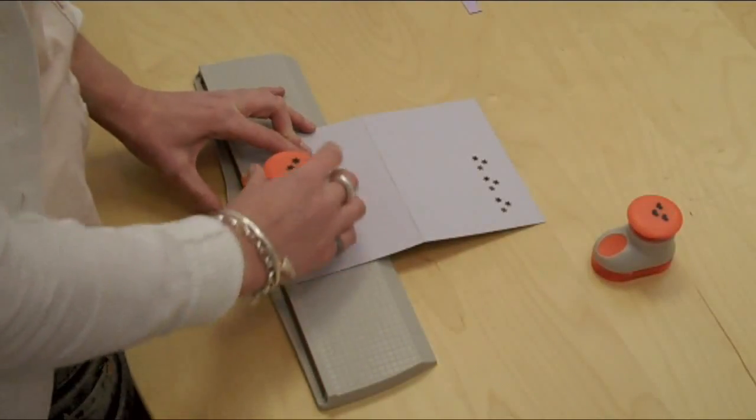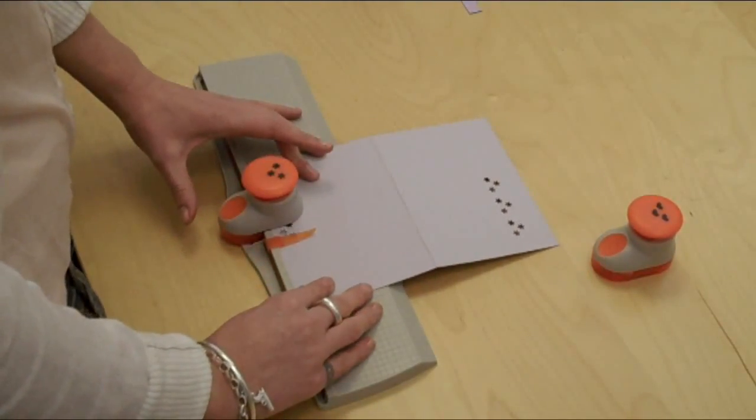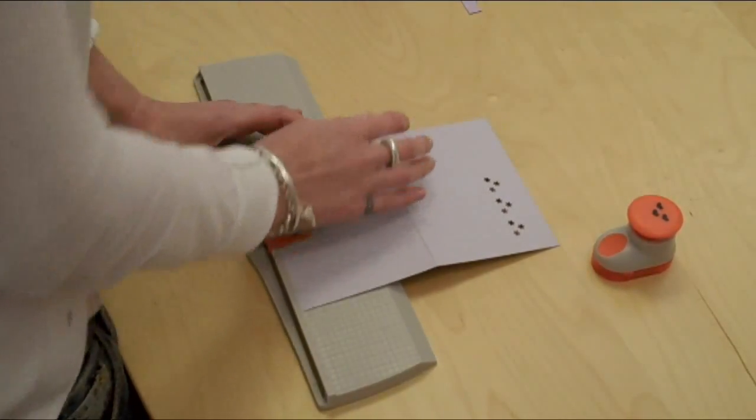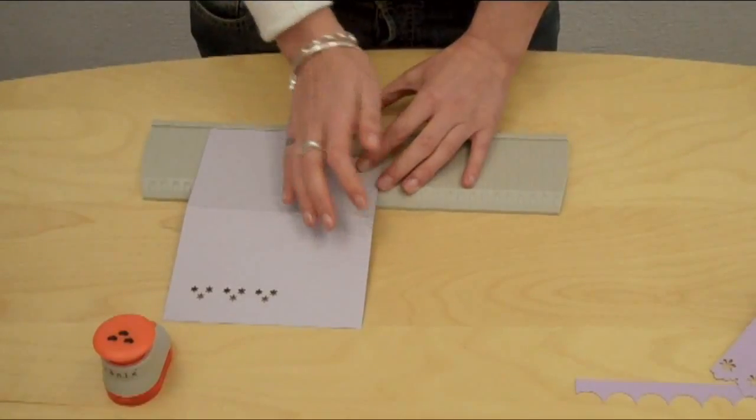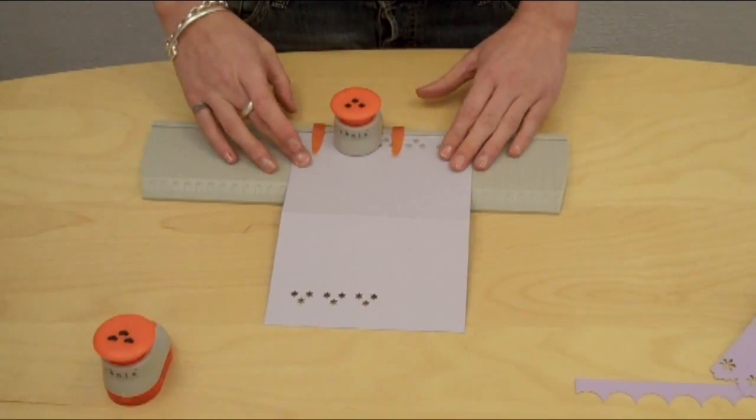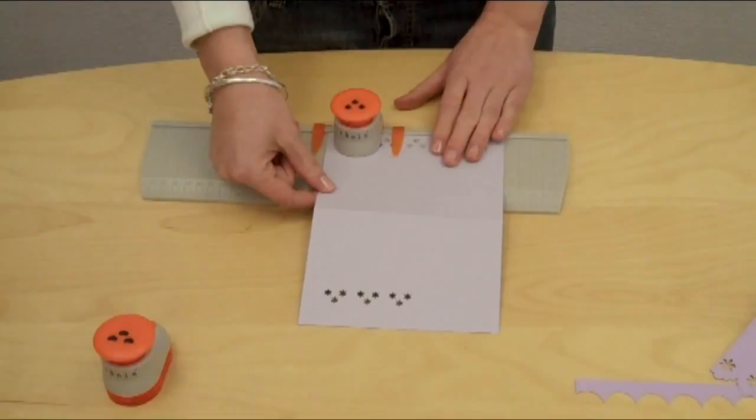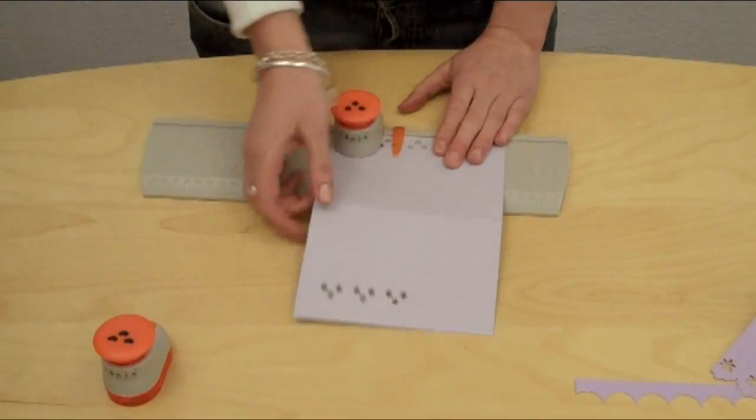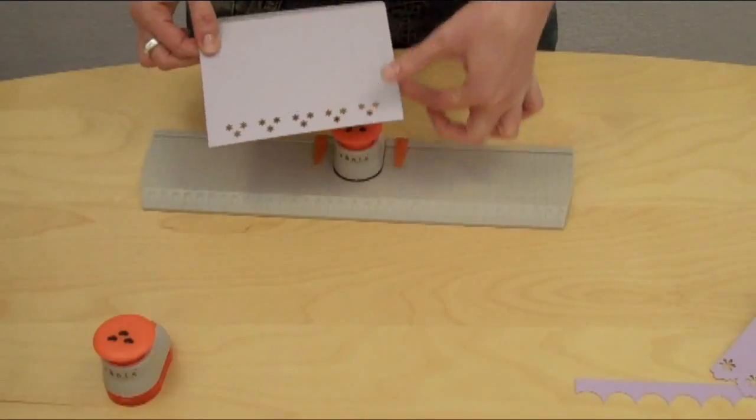Place your punch in the right position and push down all the way to the end. Again in the opposite direction, holding your card in place, and when you remove this you can see it's right on the edge of your card, equally distanced apart.